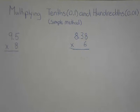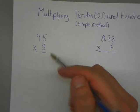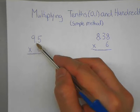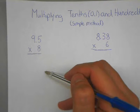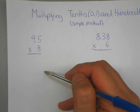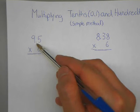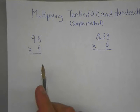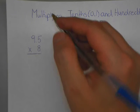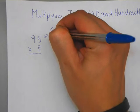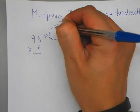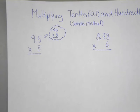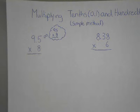So right here, our very first question, we have 9.5 times 8. Now in the simple method, this decimal right here, it shouldn't be very scary. In fact, in the simple method, what you're going to do with this decimal is you're actually just going to ignore it.